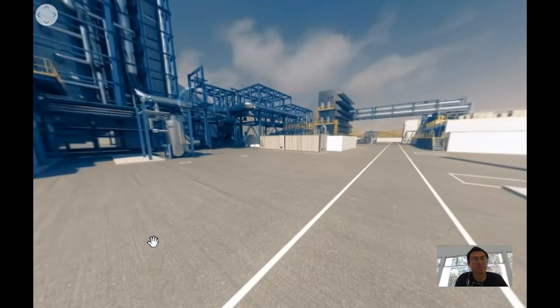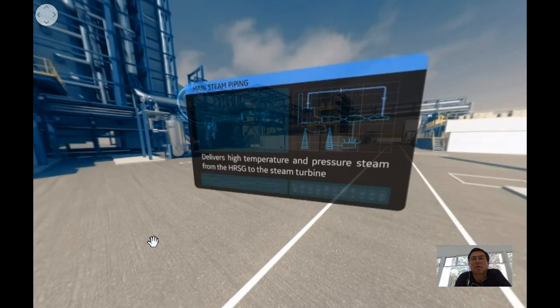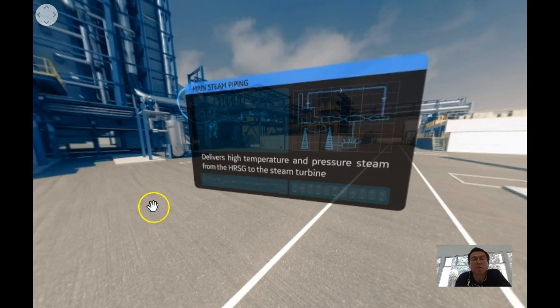We are now approaching our next stop, the steam turbine. Can you see those huge bundles of pipes running out of the HRSG? It is the main steam piping which brings high temperature and high pressure steam from the HRSG to the steam turbine.